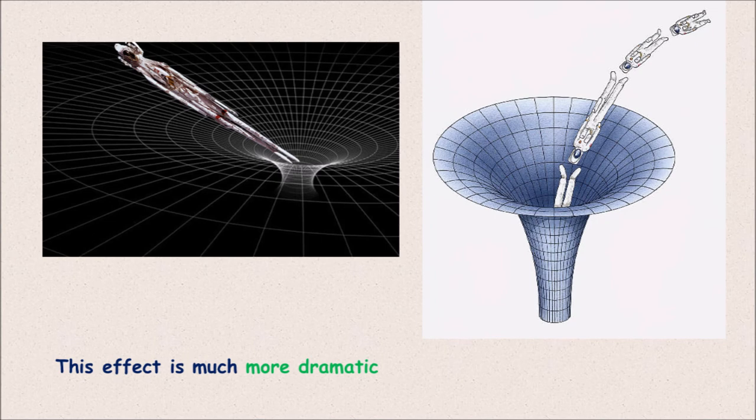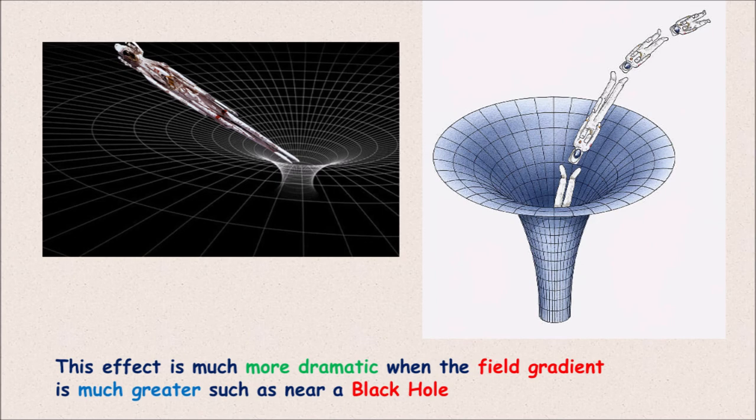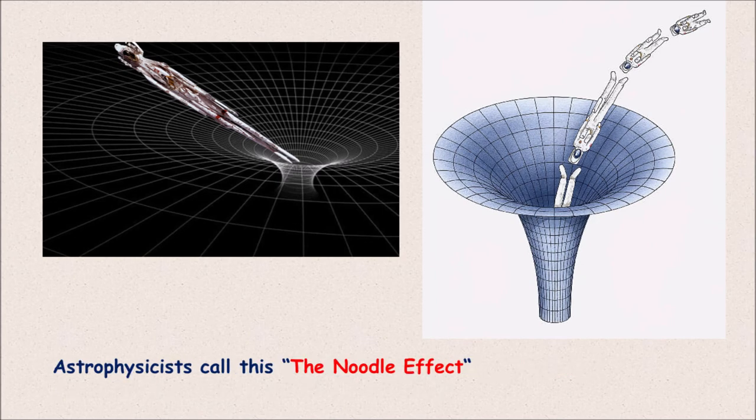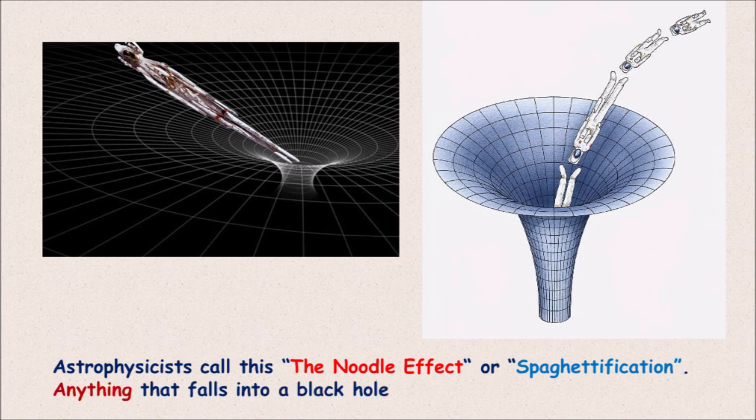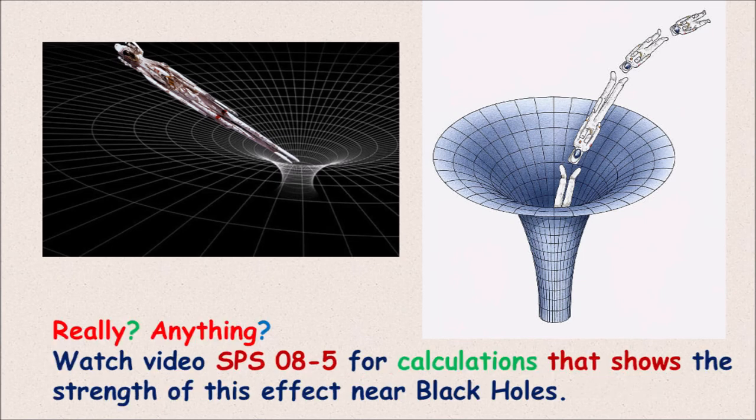This effect is much more dramatic when the field gradient is much greater, such as near a black hole. As I mentioned before, astrophysicists call this the noodle effect or spaghettification. Anything that falls into a black hole gets stretched like noodles. Really? Anything?